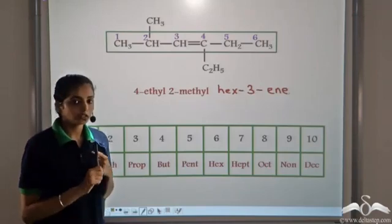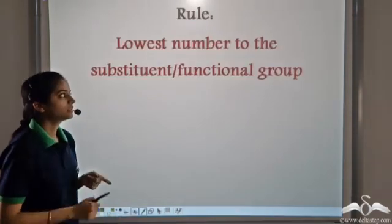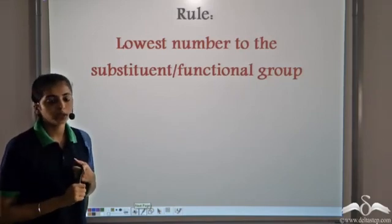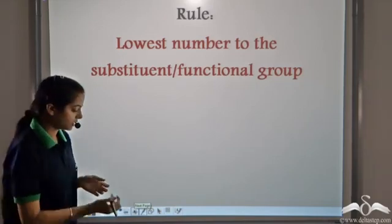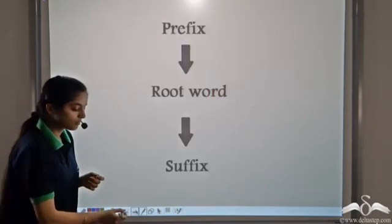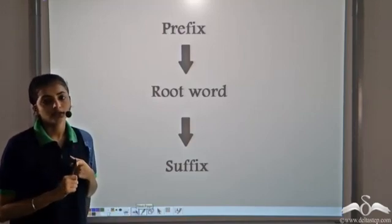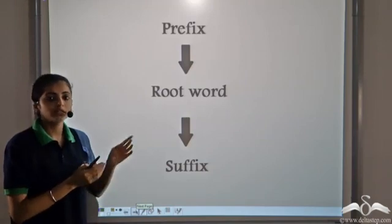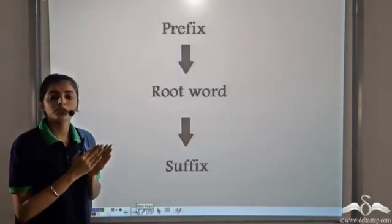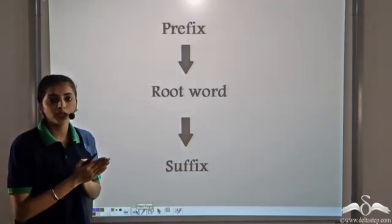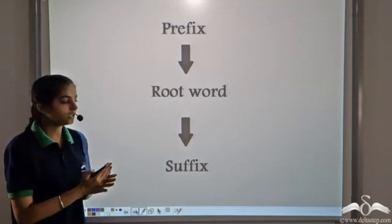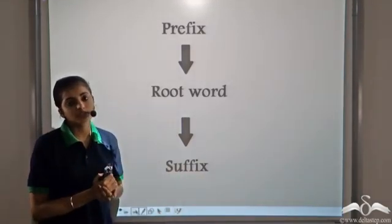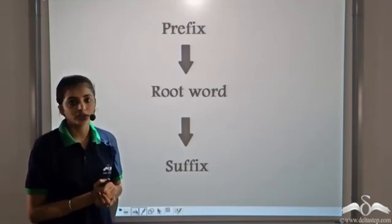Keep in mind the rules: give the lowest number to the substituent or the functional group. While naming an organic compound, there are always three parts — the prefix, given to the substituents; the word root, from the number of carbon atoms in the longest carbon chain; and the suffix, which comes from the functional group present in the compound.